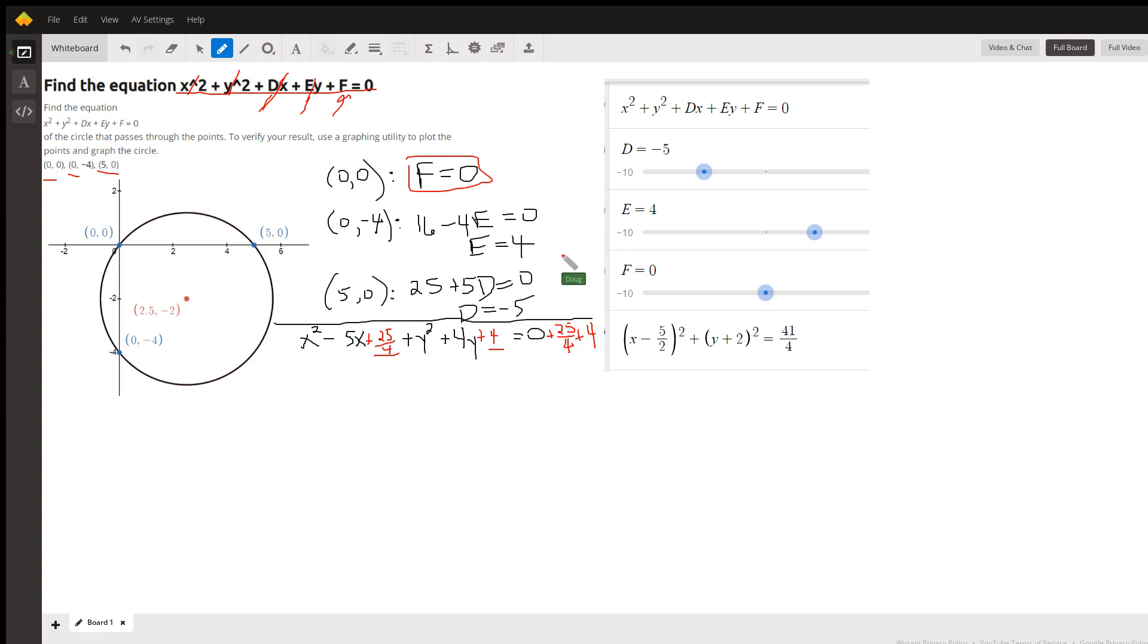And similarly for 5 comma 0, when X is 5, X squared or 5 squared is 25 plus 5D, D equals negative 5. So there's the values of D, E, and F that generate this circle right here.